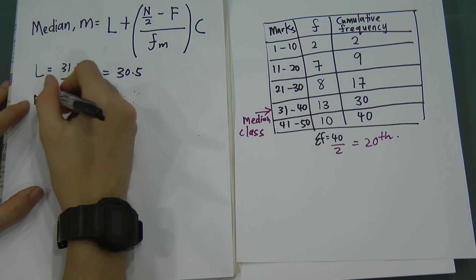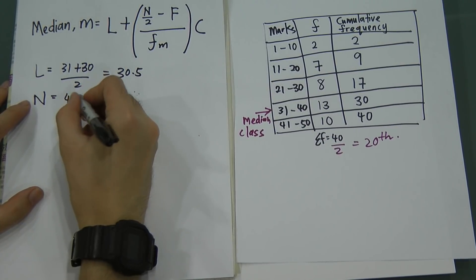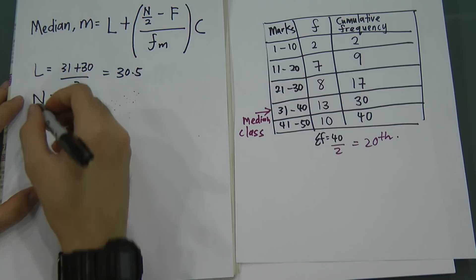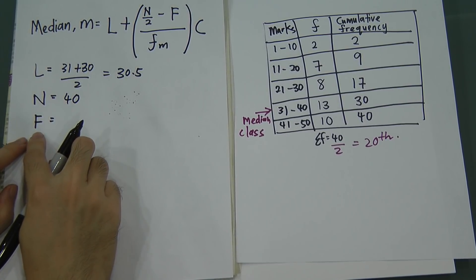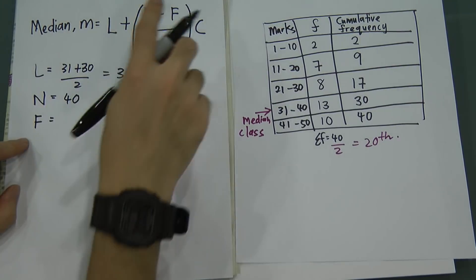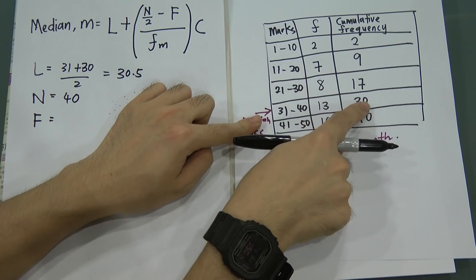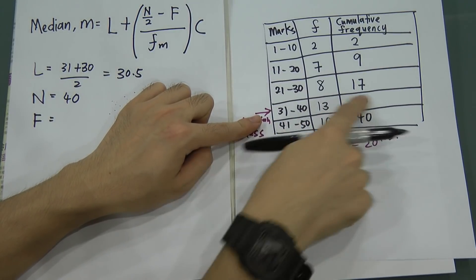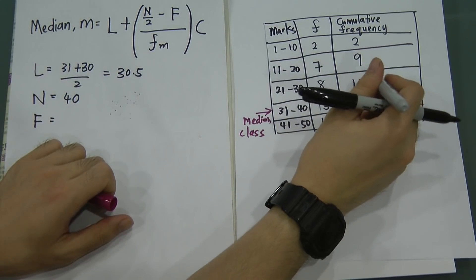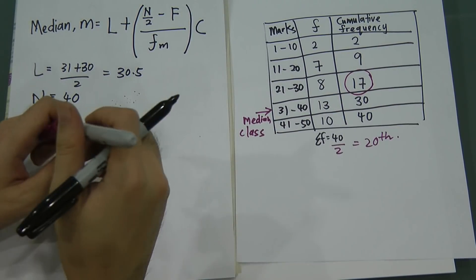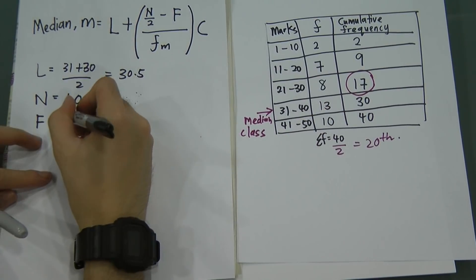What is N? N is the total frequency. Total frequency here is 40, so I just write 40. What is capital F? Capital F means the cumulative frequency before the median class. The cumulative frequency before the median class is 17. So F = 17.